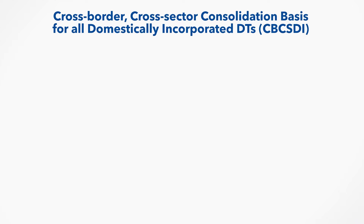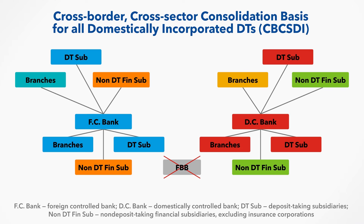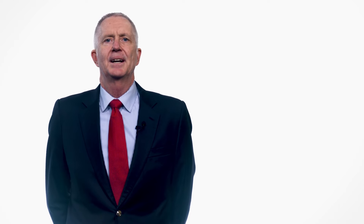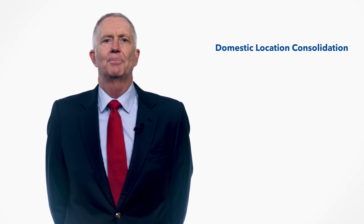Let's look at how CBCSDI consolidation is applied in a simplified illustration. All units within the big oval are resident in the domestic economy. Resident units include both domestically controlled and foreign controlled units. Note that foreign bank branches are excluded, because the consolidation method is based on domestic incorporation. Foreign bank branches would be included in the economy where the foreign bank parent is resident. The foreign branches of domestically incorporated deposit takers and their deposit taker subsidiaries and financial subsidiaries located outside the domestic economy are included in the consolidation. The 2019 FSI's guide recognizes domestic location, or DL, as a consolidation option for deposit takers.